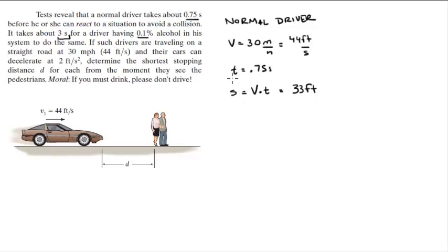Then when he starts reacting, he starts decelerating at 2 feet per second squared. a is equal to negative 2 feet per second squared because it's decelerating. So, v squared is equal to v naught squared plus 2 times a times delta s.